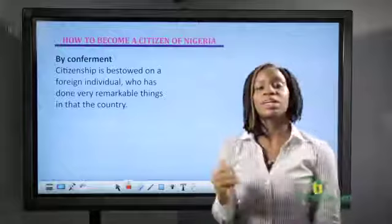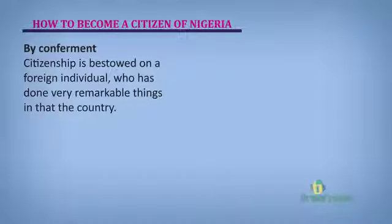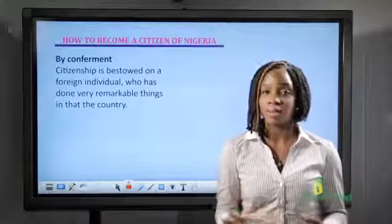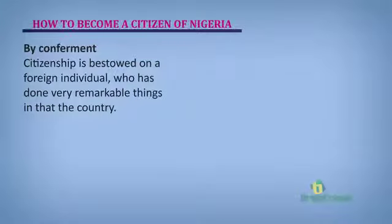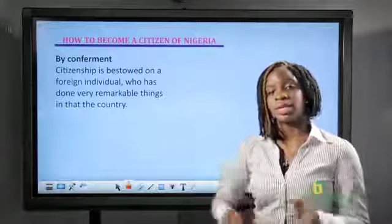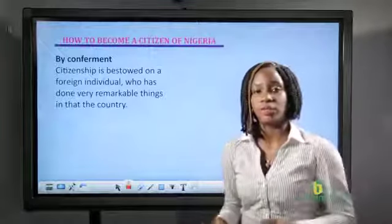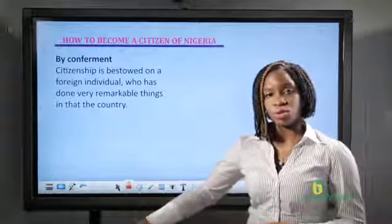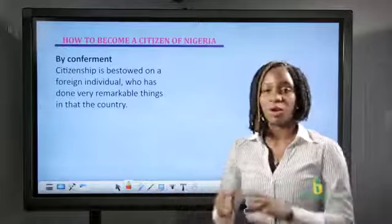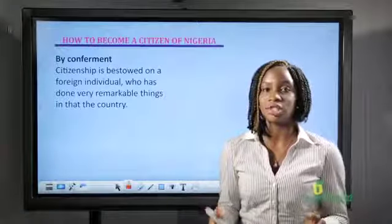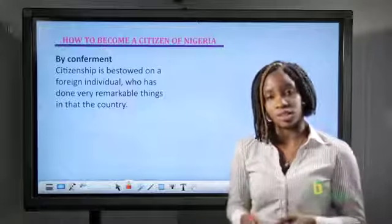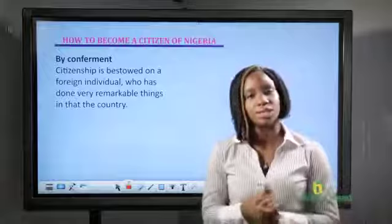The fourth means through which a person can become a citizen of Nigeria is by conferment. Conferment is simply bestowing something upon someone or granting something to someone as a way of honoring or appreciating the person for the things they have done. So applying it to citizenship, citizenship can be granted to a foreign person who has done remarkable things in a particular country. For example, an American man comes to Nigeria and builds roads, hospitals, schools, and other things that better the lives of Nigerians. This person can be granted citizenship by the government as a way of appreciating him or her for those remarkable contributions.